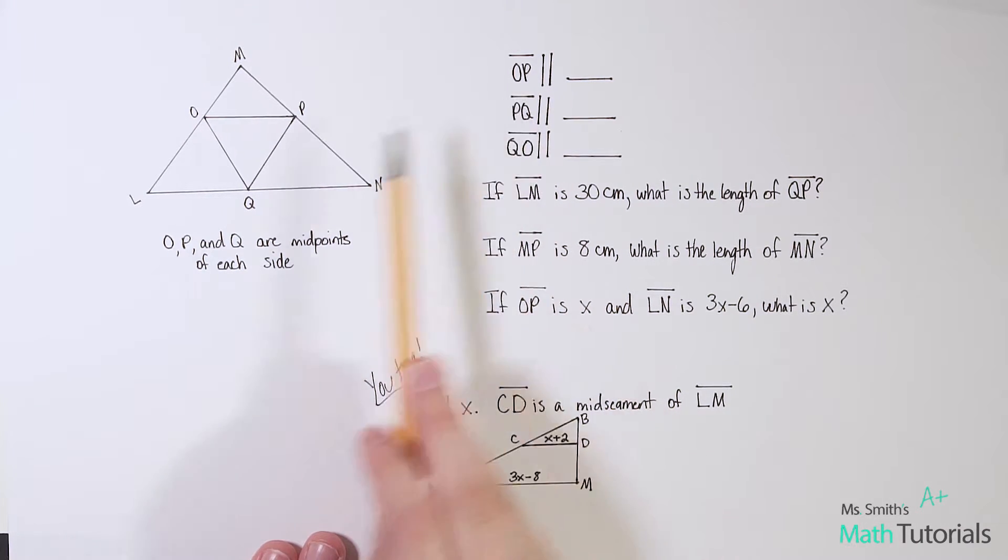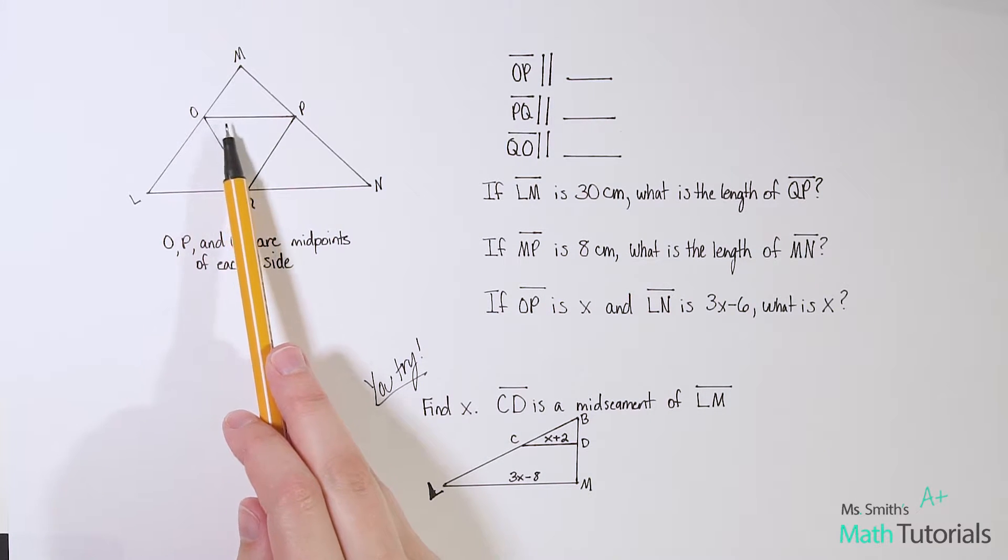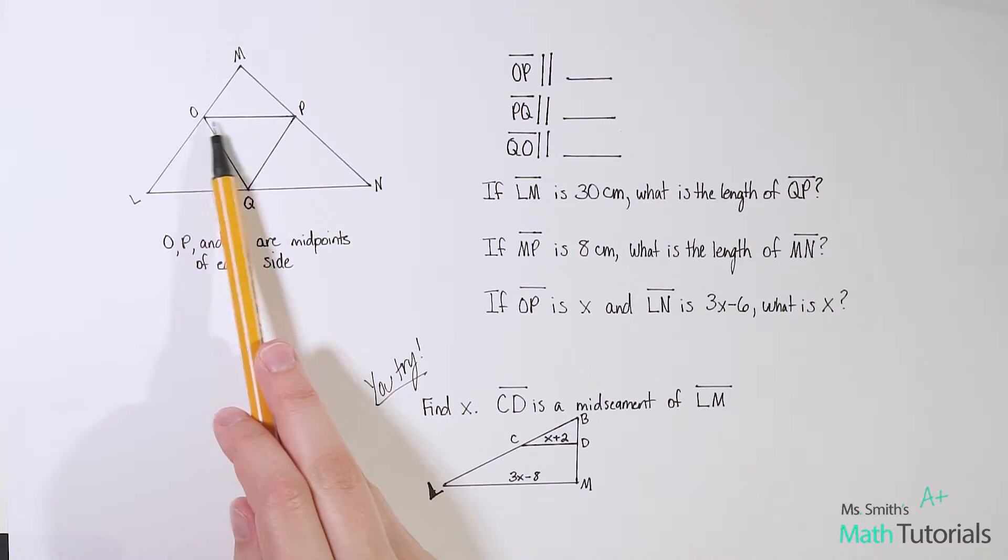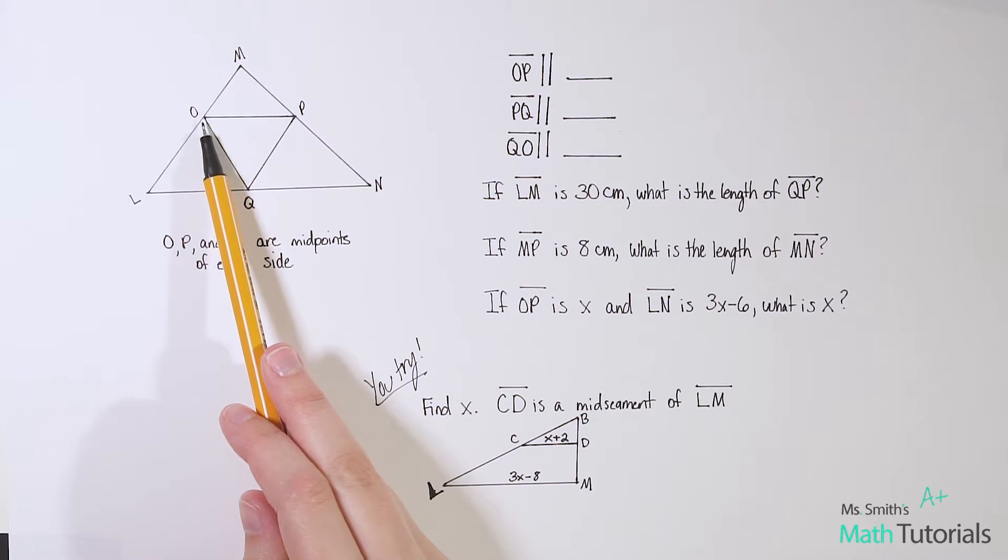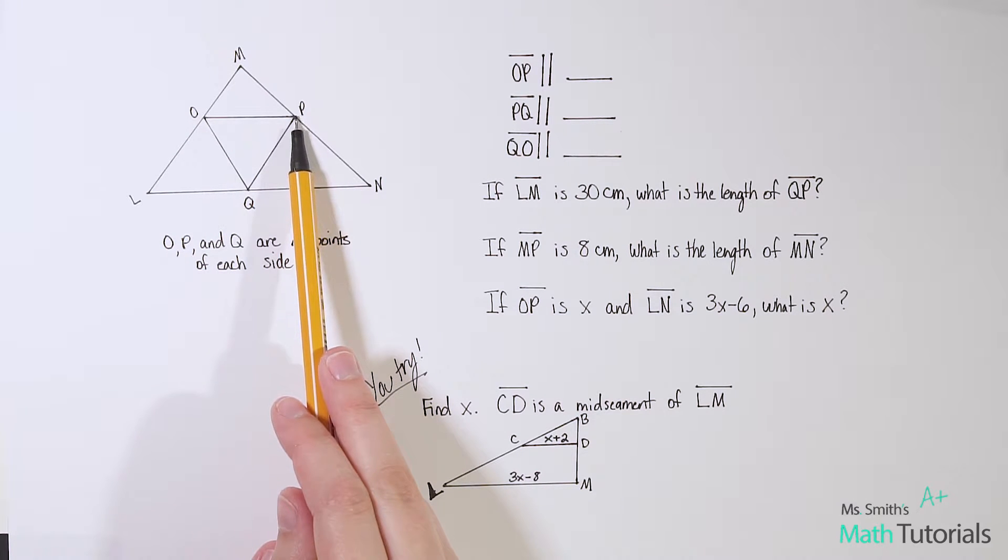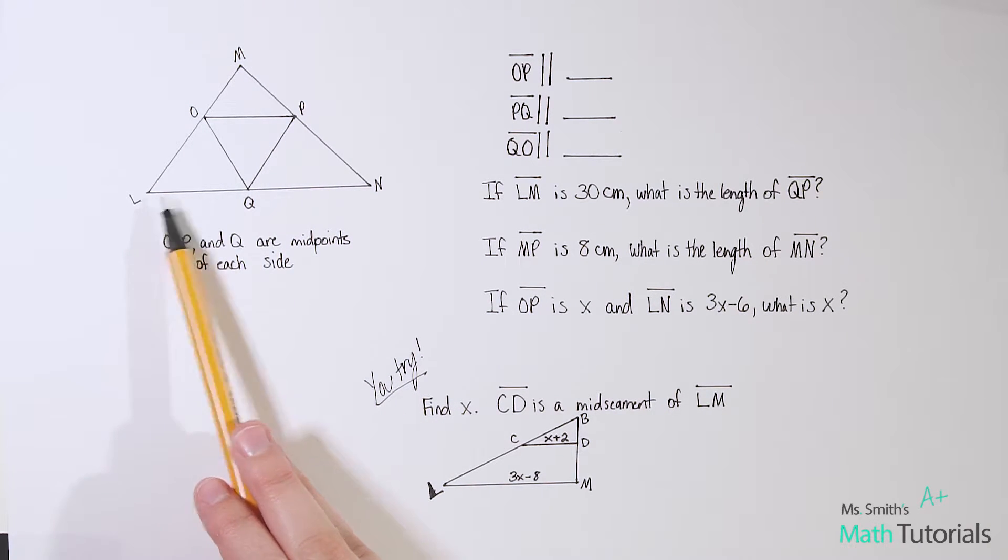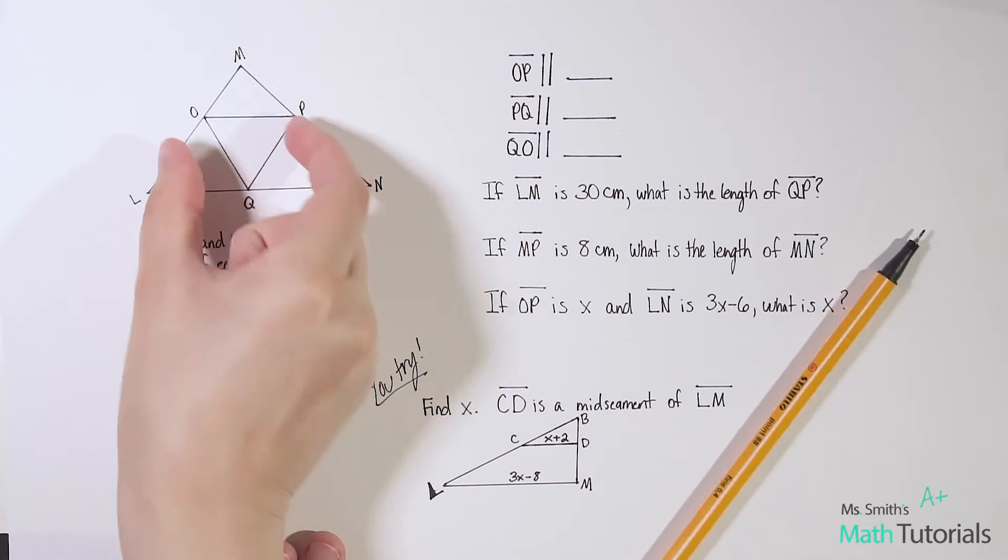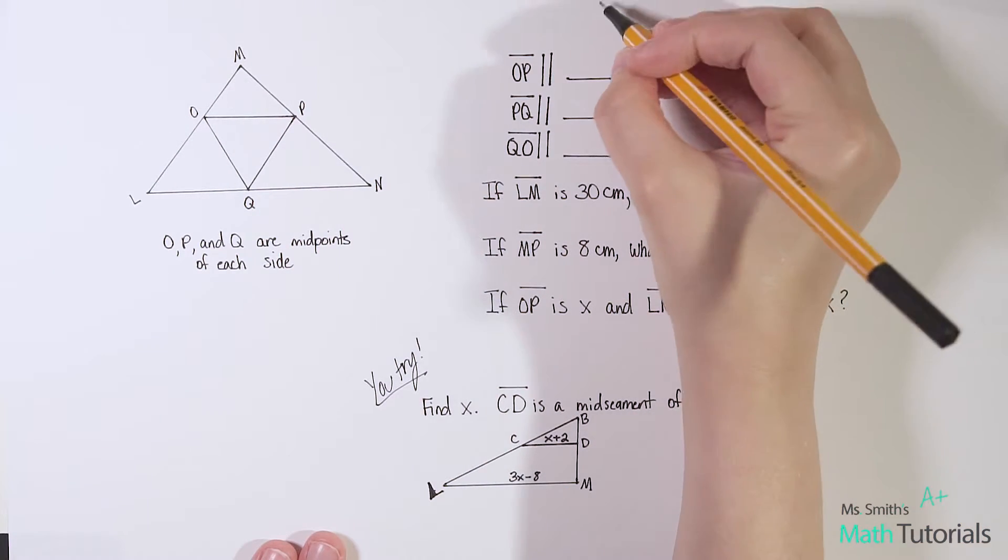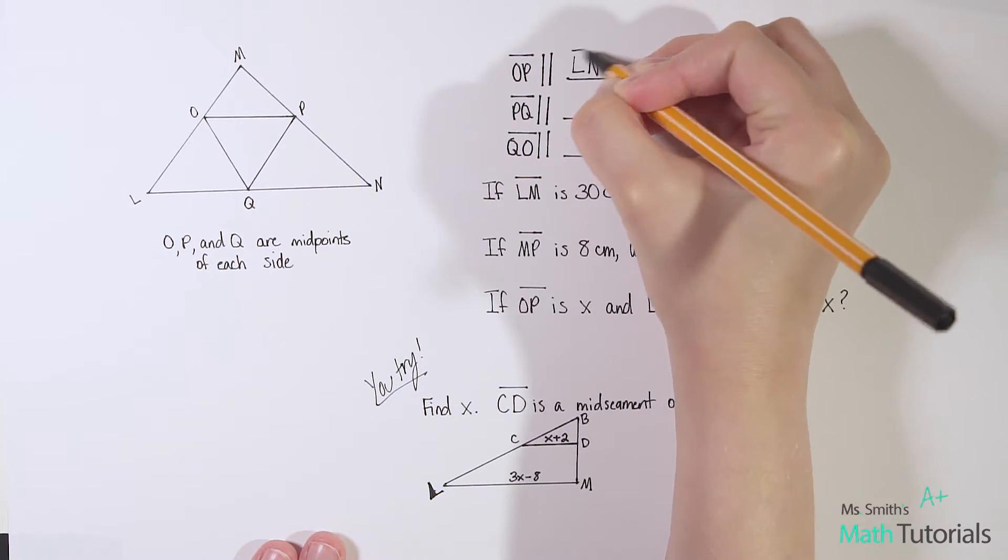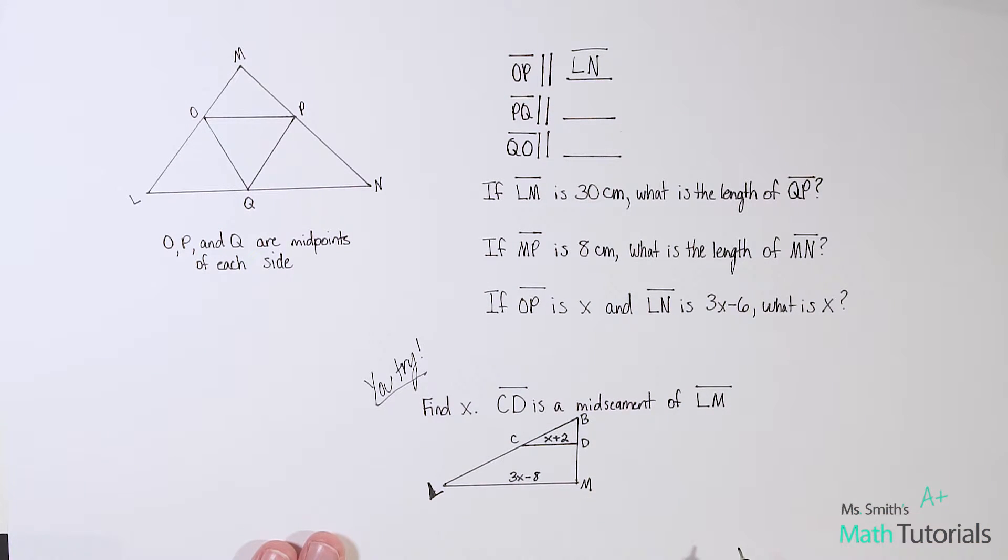So let's draw some conclusions here just for these first couple statements. So it says O, P, line O, P, which would be right here, this segment, right? O, P, is parallel, that's what that symbol means, is parallel to what? So let's think if O, P is here, what line would that be parallel to, assuming that it is the mid-segment? Well, it would be the base below it, L, N. So we can see this is parallel to this. So we would write that L, N.